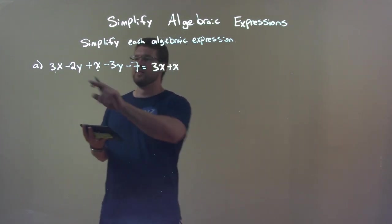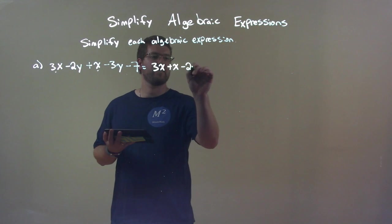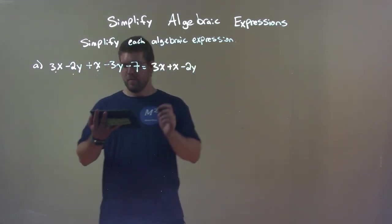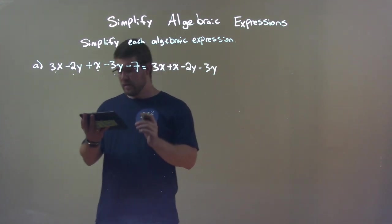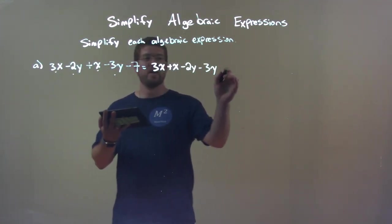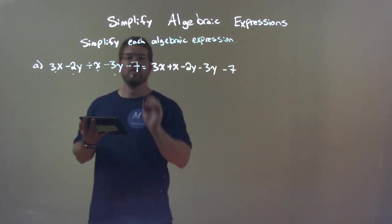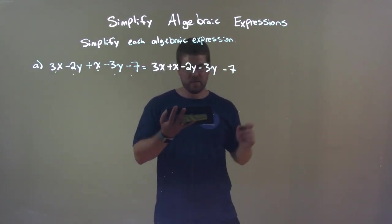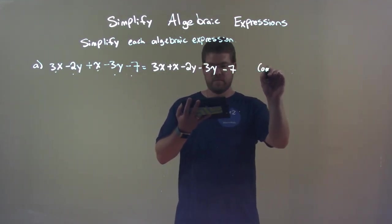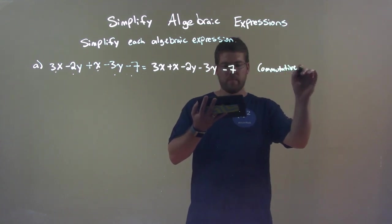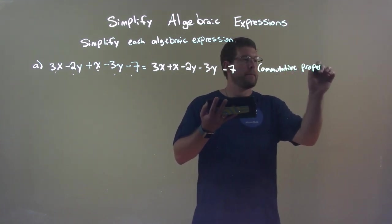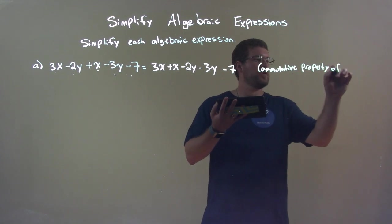Now let's deal with the y's. First we have the minus 2y and then we have the minus 3y. And lastly we get our constant over there at the end, minus 7. And we brought everything over. And like I said, this is the commutative property of addition.